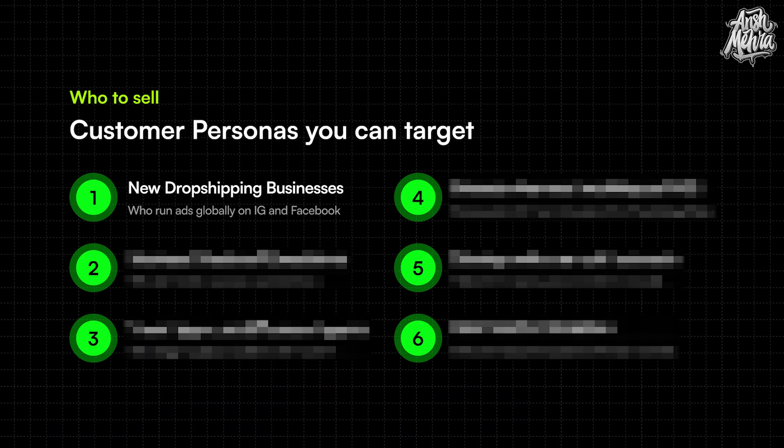Number one: businesses who run dropshipping ads on Instagram and Facebook. These businesses get a product in a specific country, and once it becomes popular, they always have this desire to sell in other countries as well. Once they capture a single part of the world, you can always offer them to run their ads in different parts of the world in their own native languages.